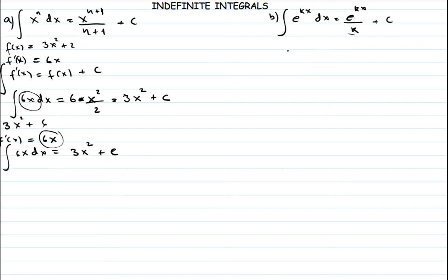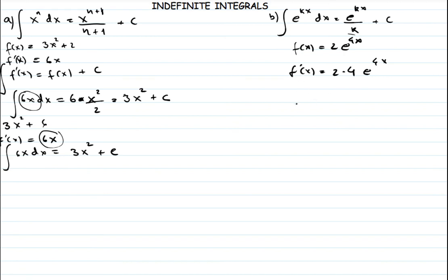The next rule is for exponential functions. Imagine a function f(x) equal to 2e raised to 4x. The derivative f'(x) is equal to 2 times the derivative of the power, which is 4, times the original function e raised to 4x. Multiplying through, we get 8e raised to 4x. This is the derivative of our function.